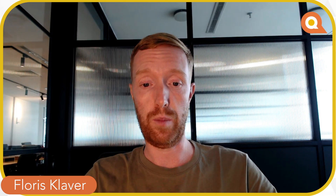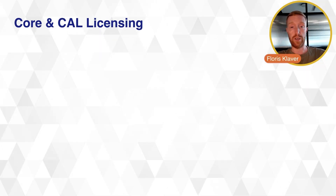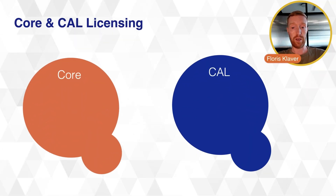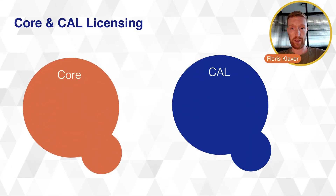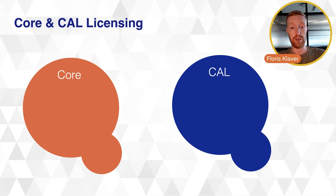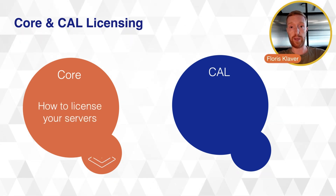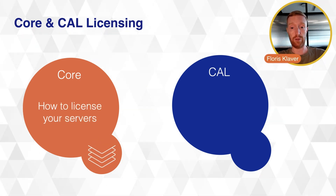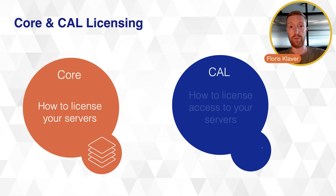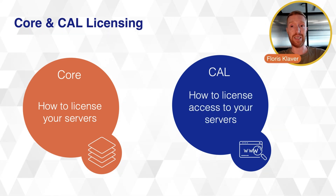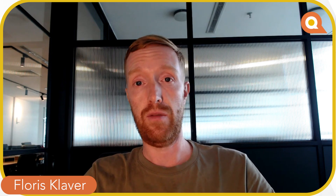When we talk about Windows Server licensing, we talk about the Windows Server Core and Client Access License (CAL) licensing model. Core and CAL licensing covers two different things: first, the core aspect, which is mainly about how to license your servers; and second, the CAL part, which is mainly about how to license the access to those servers.